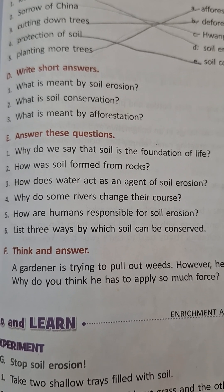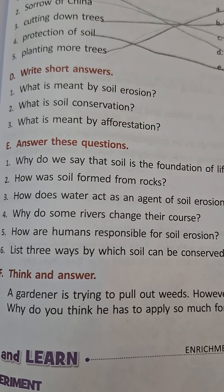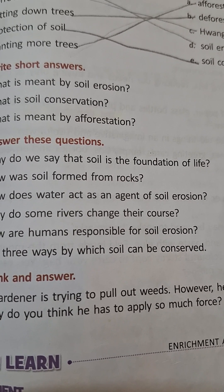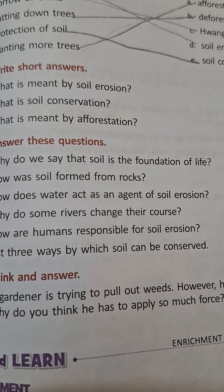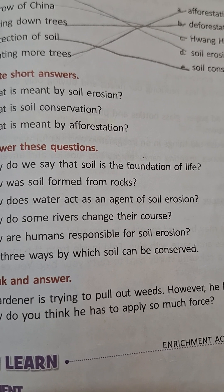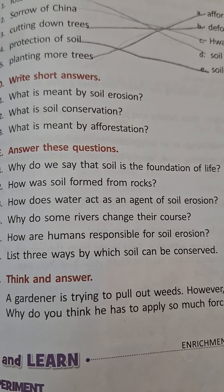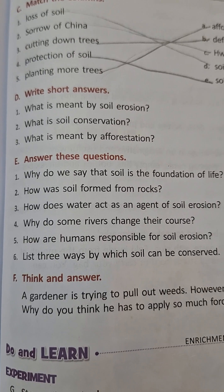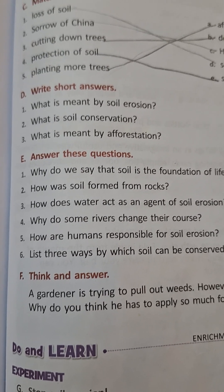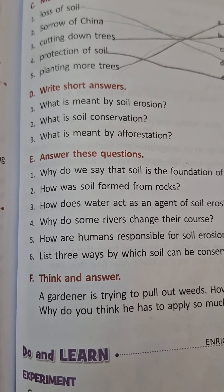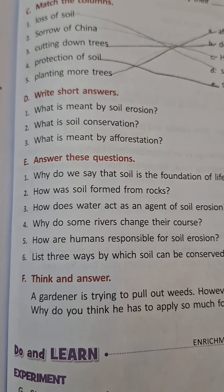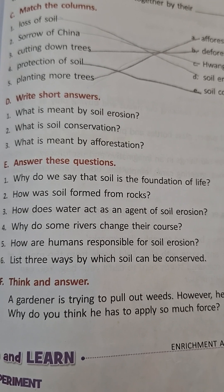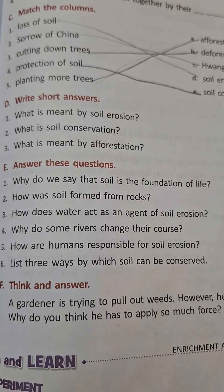How was soil formed from rocks? When the earth was young, there were only air and hard rocks. The sun heated the rocks, rain made them cold, and the wind blew over them. This continued for thousands of years. As a result, the rocks broke into smaller pieces, were carried around by wind and water, and rubbed against each other until they became tiny particles of soil. Over millions of years, due to the action of wind, sun, and water, these hard rocks broke down into tiny particles, and slowly the soil we see today was formed.